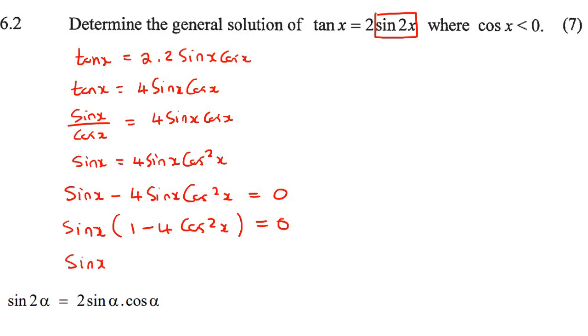So now we can say, therefore, sin x is equal to 0, or 1 minus 4 cos squared x is equal to 0. And so we can say sin x is 0 or 1 is equal to 4 cos squared x. Then we can divide by 4, so we're going to end up with sin x equals to 0 or a quarter is equal to cos squared x.